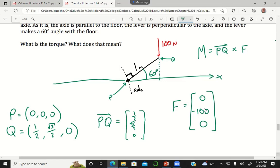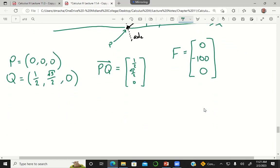Now to find the torque, I just have to take the cross product of this vector with this vector. So PQ cross F is going to be the determinant of this matrix, which is not really a matrix because i, j, and k are vectors. But this would be one half, root three over two, zero and zero, negative 100, zero.